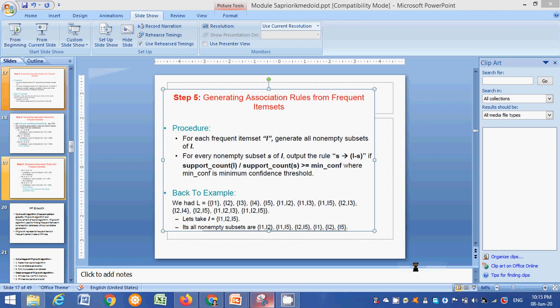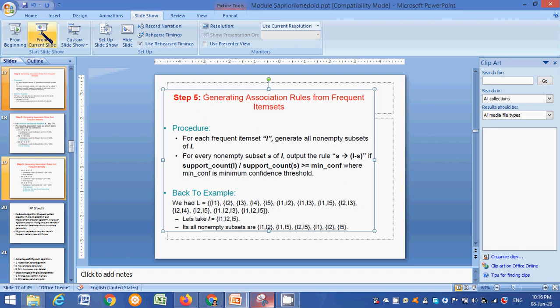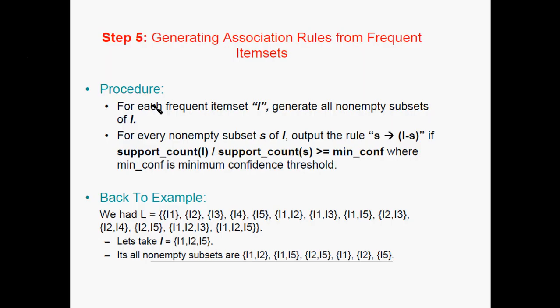In this video, I explained that we are using the Apriori algorithm and we are using Frequent Item Set. In that Frequent Item Set, we are using the Association Rule. For example, I am using the Procedure Rule.